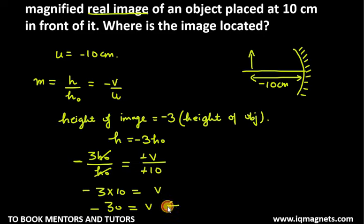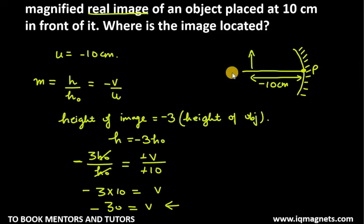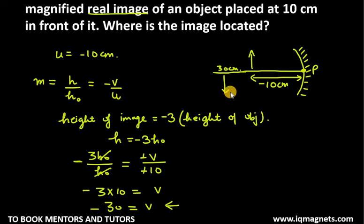So the location of the image is at minus 30 cm — the distance from the pole is minus 30 cm, and the image is formed somewhere here on the diagram. So this is your answer for question number 2.